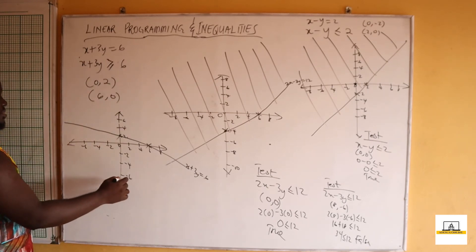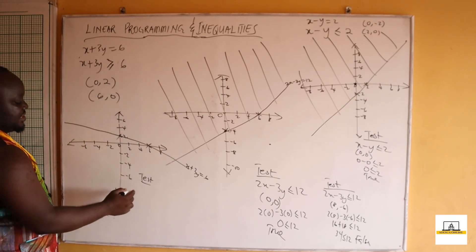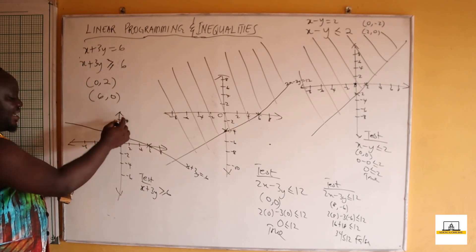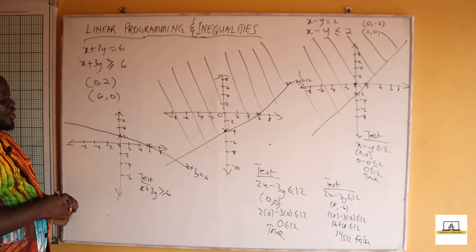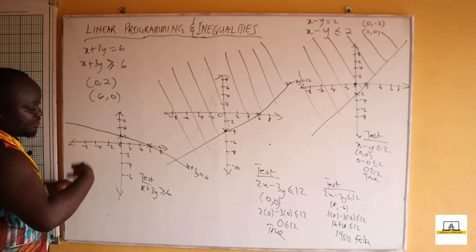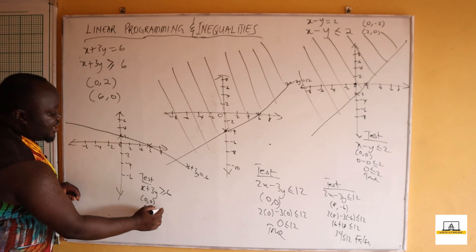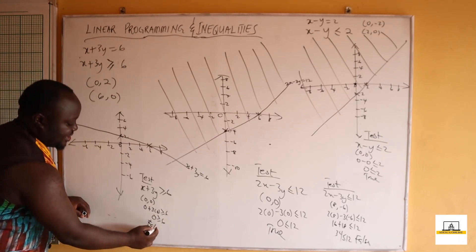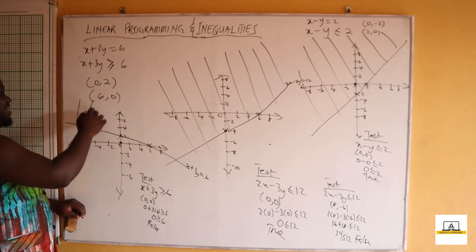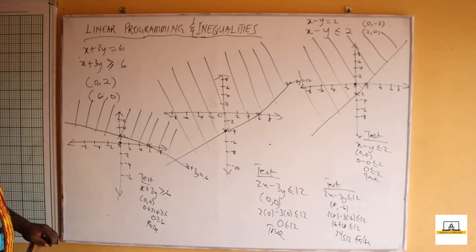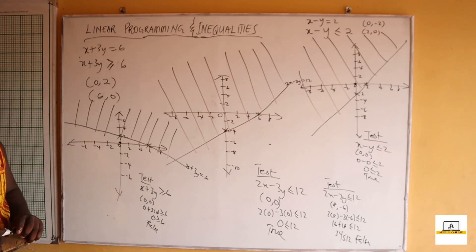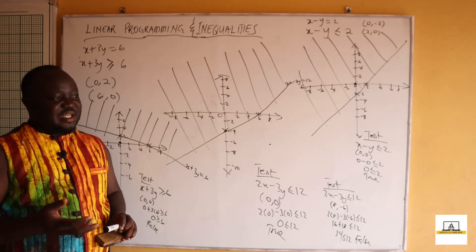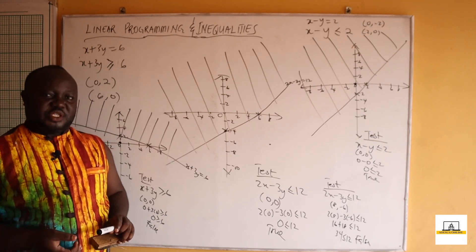Now we test to find where x plus 3y greater than or equal to 6 lies. Picking the origin (0, 0): 0 plus 3 times 0 equals 0, and we ask is 0 greater than or equal to 6? No — this is a false statement. Because the origin is below the line and gives a false result, the solution lies above the line. We also note there is a special situation when the line passes through the origin, which we will look at next.